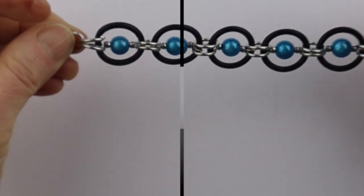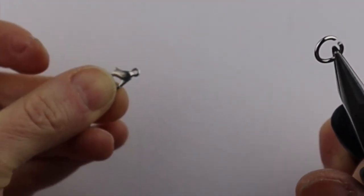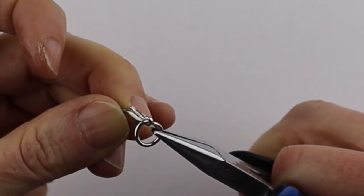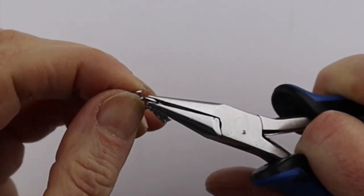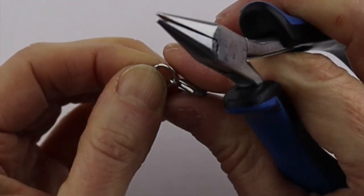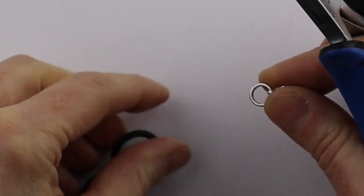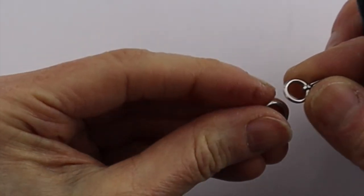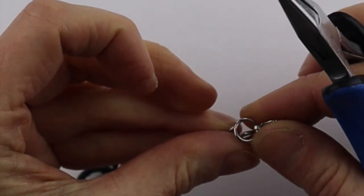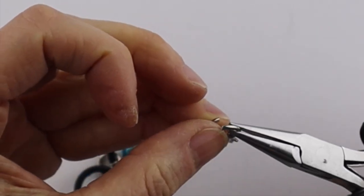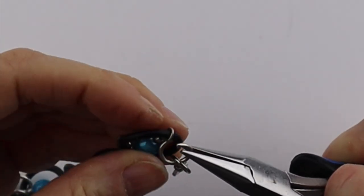For the lobster clasp, I'm first going to put a jump ring into the end of the lobster clasp and just close it up. Then I'm going to take the bracelet back and put one of the larger jump rings in there and attach it to one side.